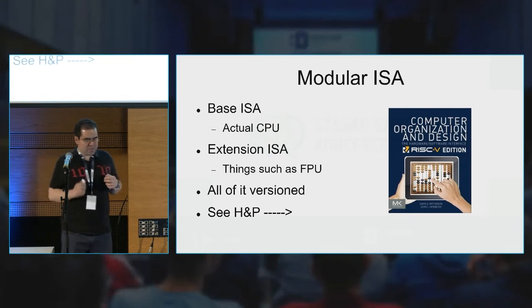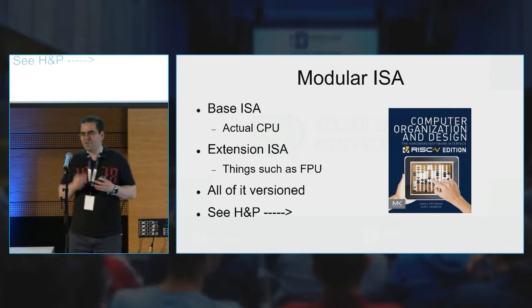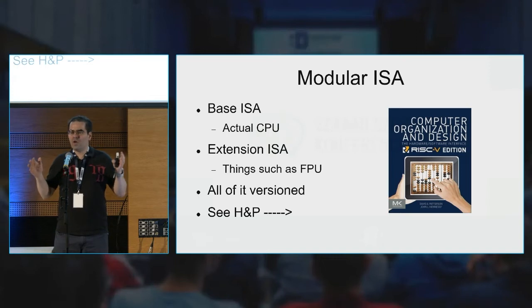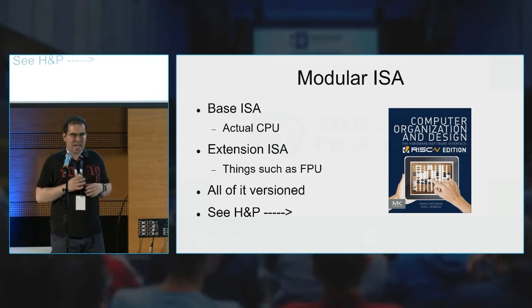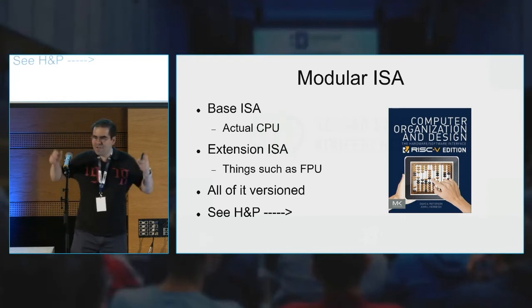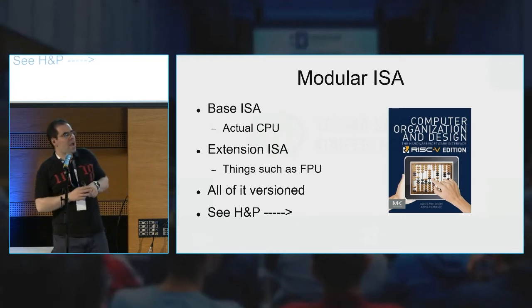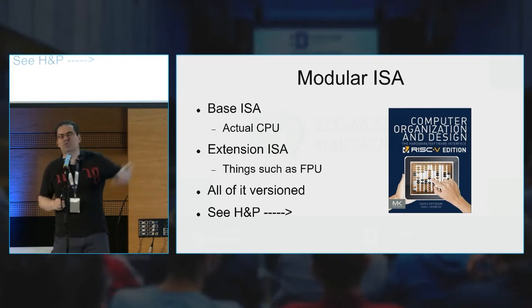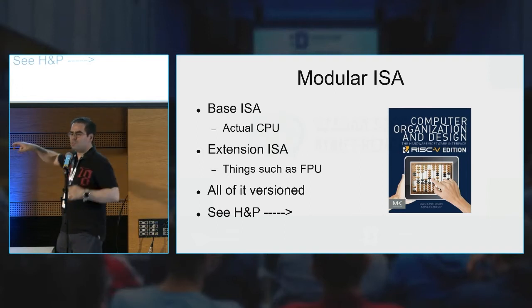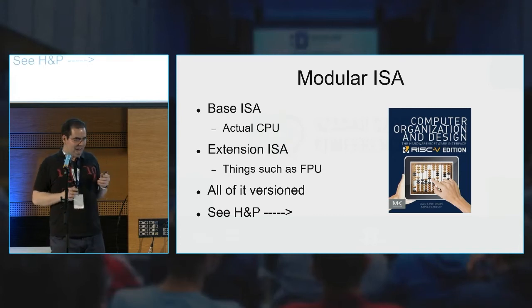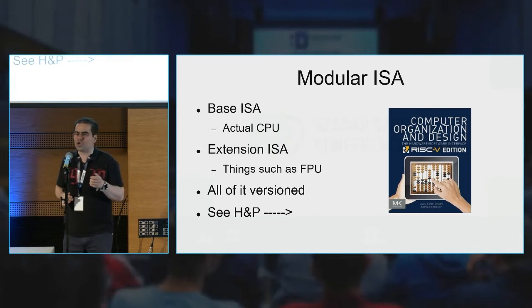Very important — first things first. RISC-V is basically a name for a whole family of different products and processes. So if you have a RISC-V chip here, and you grab one in Macau and another in Moscow from a different vendor, it is very, very likely that these are not compatible with one another.